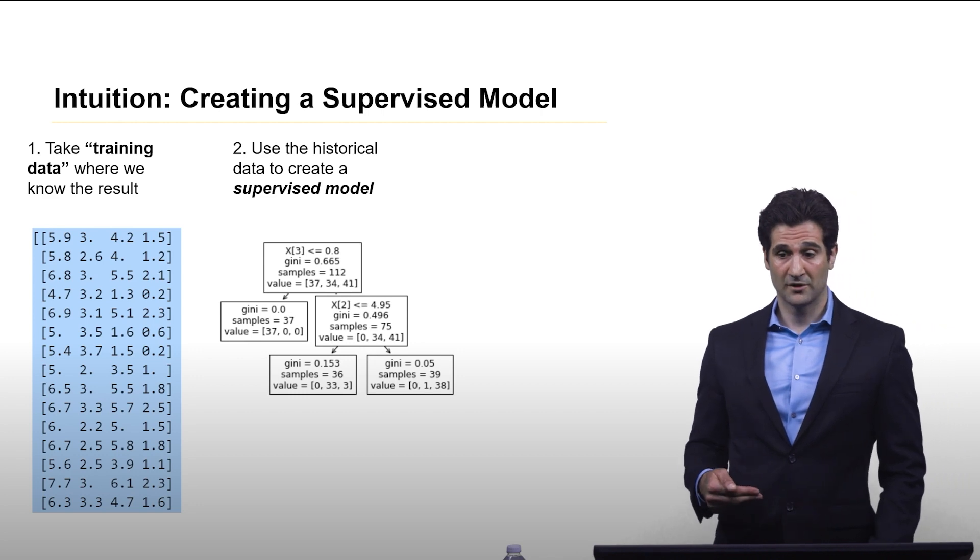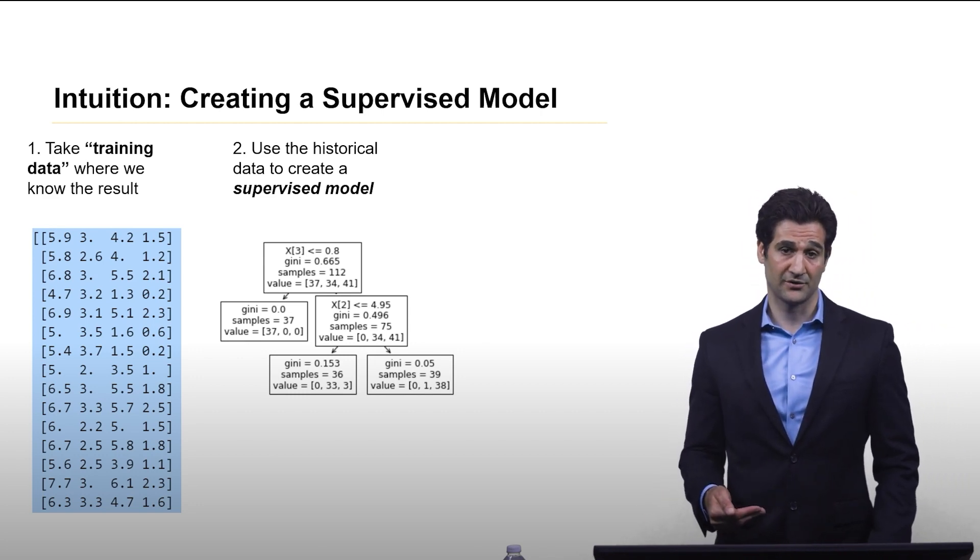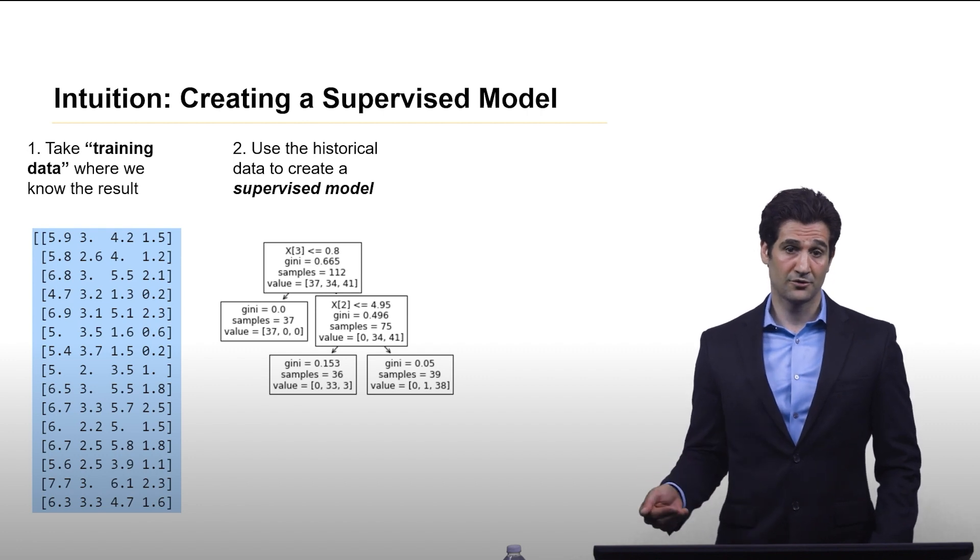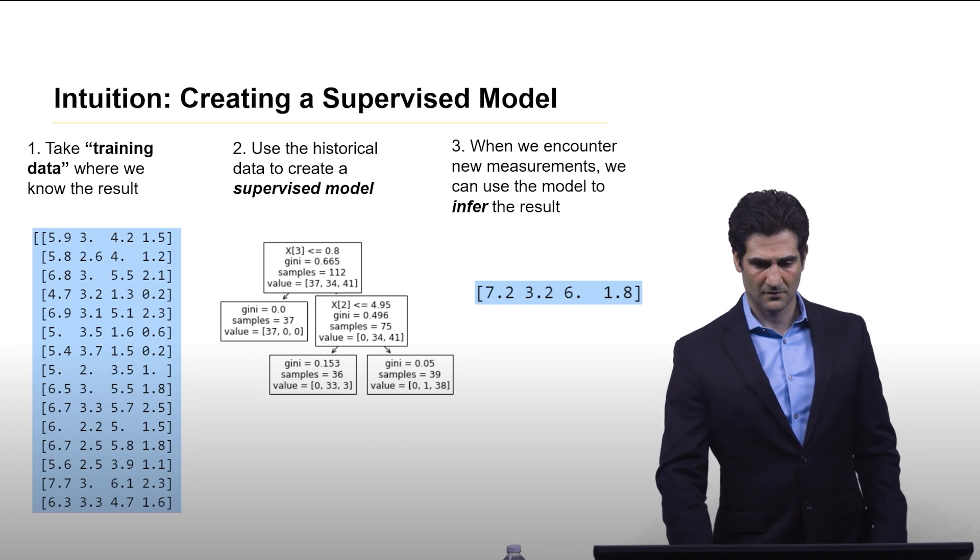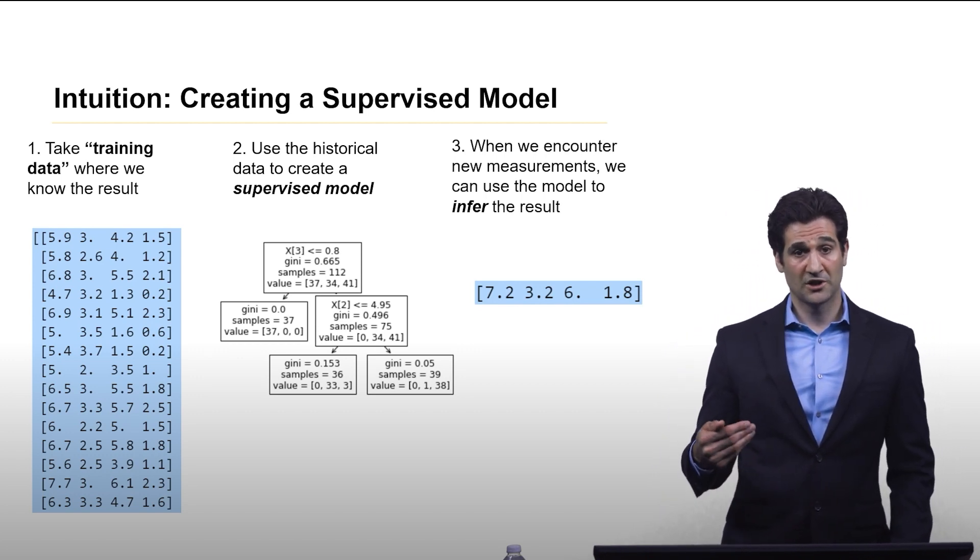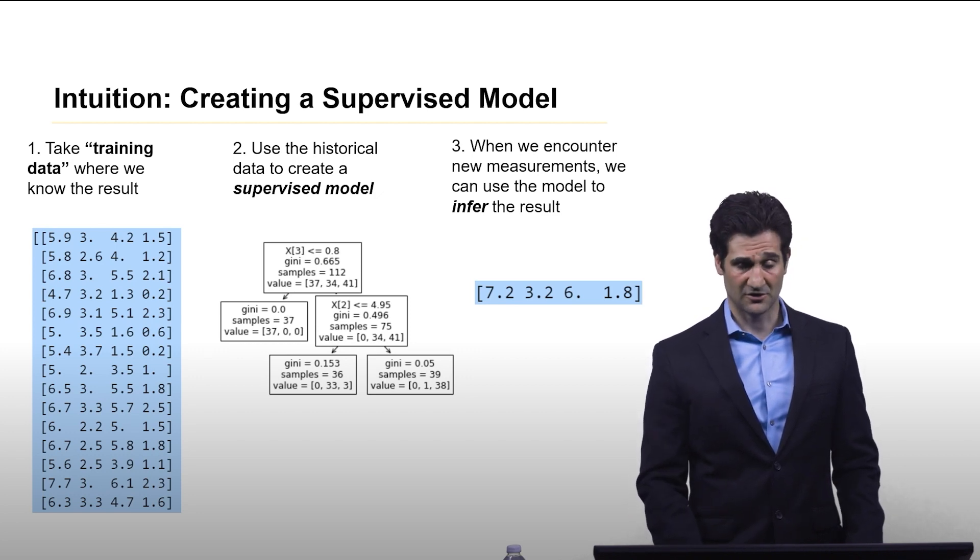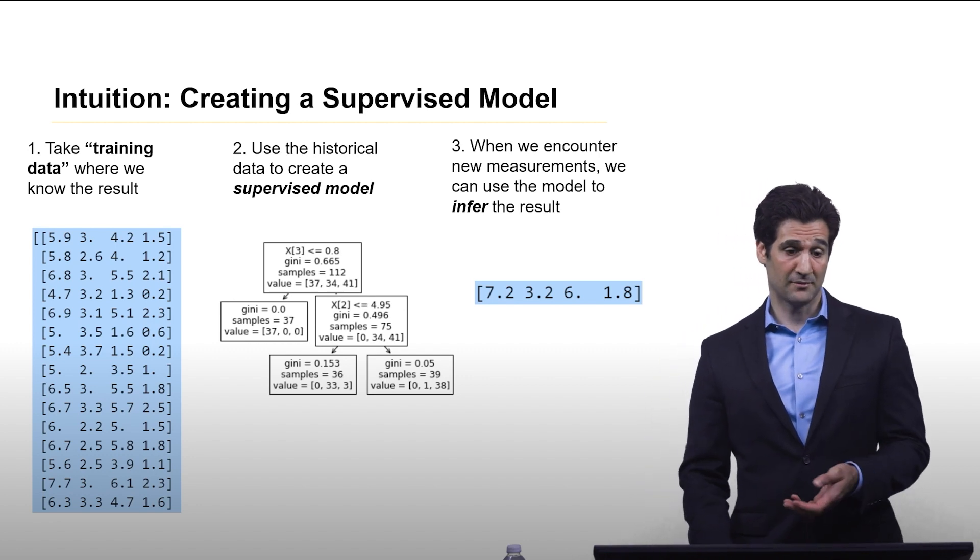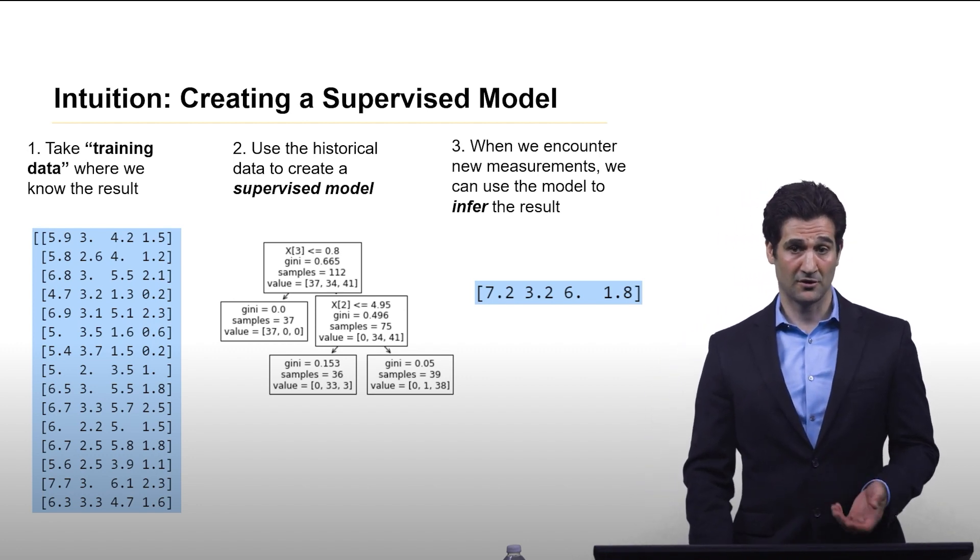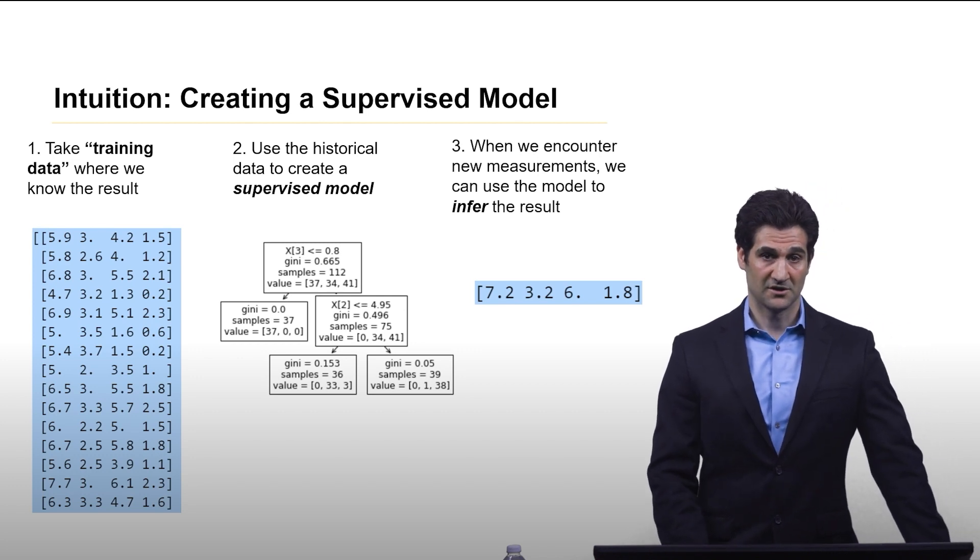Given that training data, we will use what's called a training algorithm that we will discuss in detail today for the decision tree in order to create a supervised model. And once we have that model, we can use it to make inferences on data that has not previously been seen and draw conclusions. In this case, with our iris example, based on the measurements of petal and sepal length and width, we want to conclude what species of iris is in the picture.